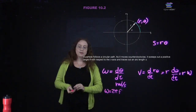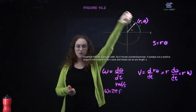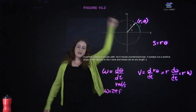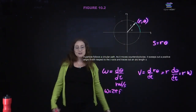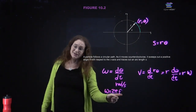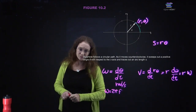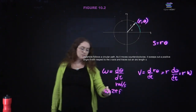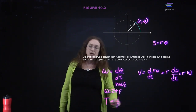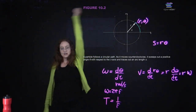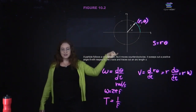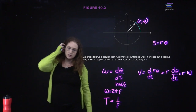If you have something rotating around a circle, the frequency is the number of rotations per second. The angular frequency is the number of radians per second — it's 2 pi times the number of cycles per second. The period is equal to 1 over the frequency, so it's the amount of time it takes for one cycle, inversely proportional to the number of cycles per second.